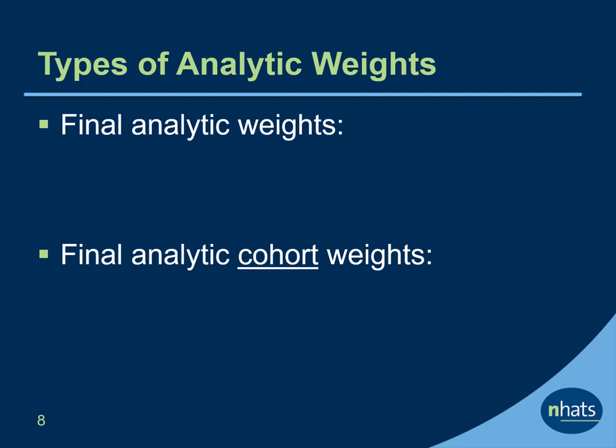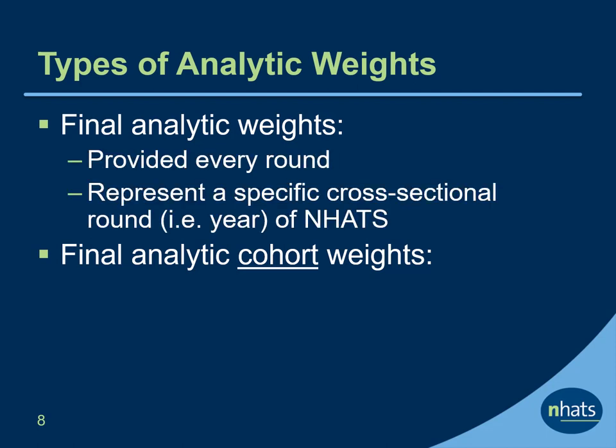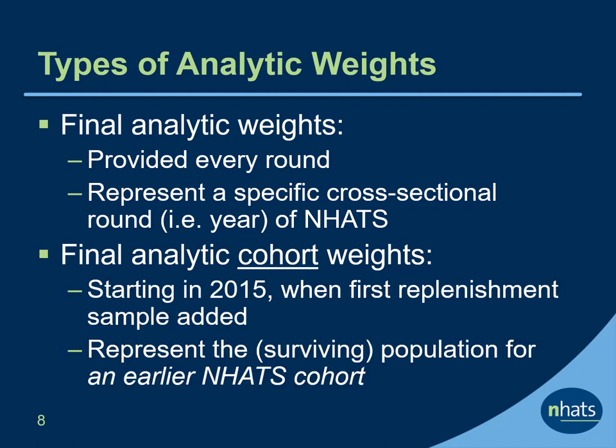Two types of analytic weights are available starting in 2015. The final analytic weights are provided every round and always represent a specific cross-sectional round or year of NHATS. The final analytic cohort weights are available starting in 2015, when the first replenishment sample was added. These weights allow the user to draw inferences about survivors from an earlier cohort.